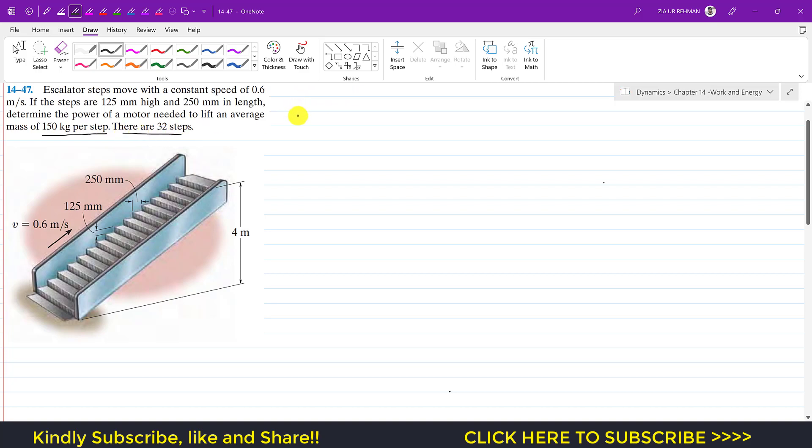So the total mass which the escalator needs to move up is by a 4 meter distance. Per step it needs to carry 150 kg. Since there are 32 steps, the total mass it needs to carry is equal to 150 kg per step times 32 steps.